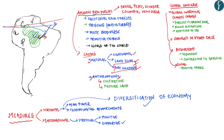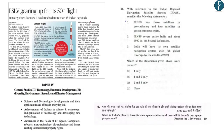Let's now move on to the next news, which is on page number 8: 'PSLV Gearing Up for Its 50th Flight.' The Indian Space Research Organisation (ISRO) is preparing for the 50th flight of the Polar Satellite Launch Vehicle (PSLV) — popularly known as the agency's workhorse, the most successful launch vehicle developed by ISRO. So far, 49 PSLV missions have lifted off from Satish Dhawan Space Centre, Sriharikota.